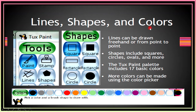Lines, Shapes, and Colors tools. Lines can be drawn freehand or from point to point. Shape tools include square, circle, oval, and more. The Tuxpaint palette includes 17 basic colors.